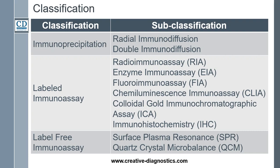While some kind of label is generally employed in immunoassays, there are certain kinds of assays which do not rely on labels, that is surface plasmon resonance and quartz crystal microbalance.